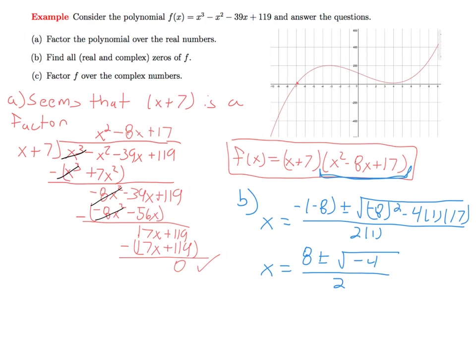Now we can simplify the complex zeros. The square root of minus 4 gives us plus or minus 2i over 2. We can factor out a 2 from each term in the numerator, so this gives us two complex roots at 4 plus or minus i.